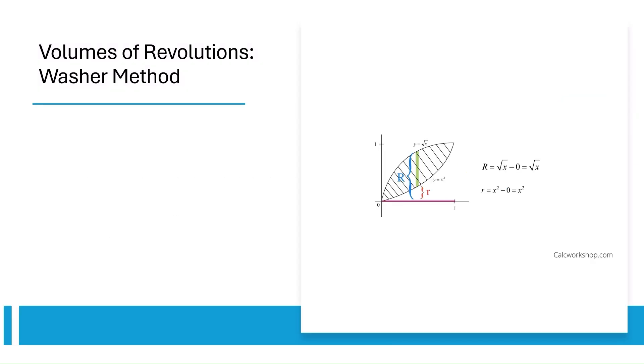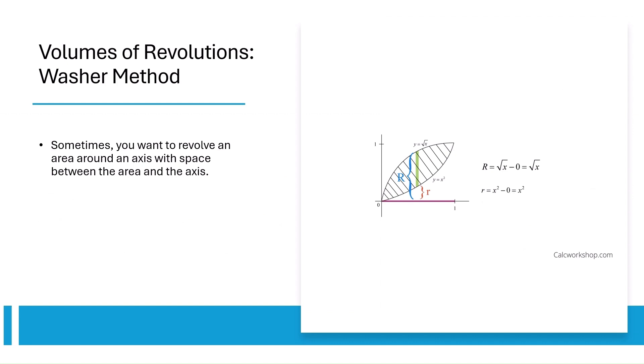Sometimes you want to revolve an area around an axis when you have space between the area and the axis. In this case, we use the washer method, where you subtract the inner radius squared from the outer radius squared.